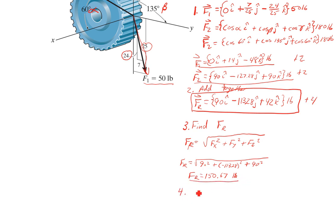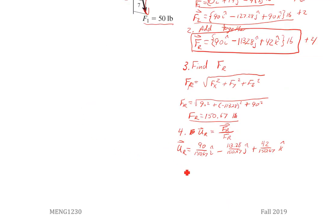Last, we're just going to divide by that. UR, the unit vector in the resultant direction, is our resultant vector divided by our magnitude. So I'm going to take 90 divided by this thing, negative 113.28 divided by this thing, 42 divided by that thing. It's a vector, so we get 90 over 150.67 minus 113.28 over 150.67 in the J direction plus 42 over 150.67 in the K direction.